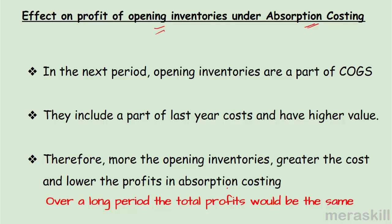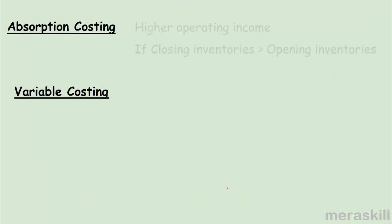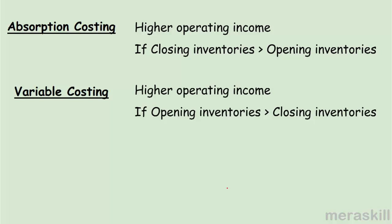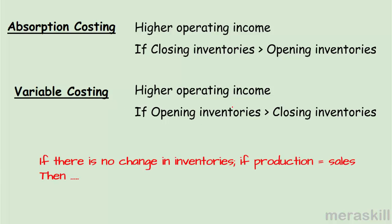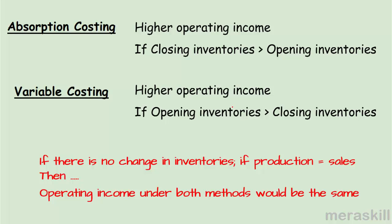Over a long period, the total profits under both methods would be the same. Under absorption costing, you have higher operating income when closing inventories are greater than opening inventories. Under variable costing, you have higher operating income when opening inventories are greater than closing inventories. If opening and closing inventories are the same, then operating income under both methods would be equal. Note: we are not considering any under or over absorption of overheads here; if present, it would also be adjusted in the income statement.